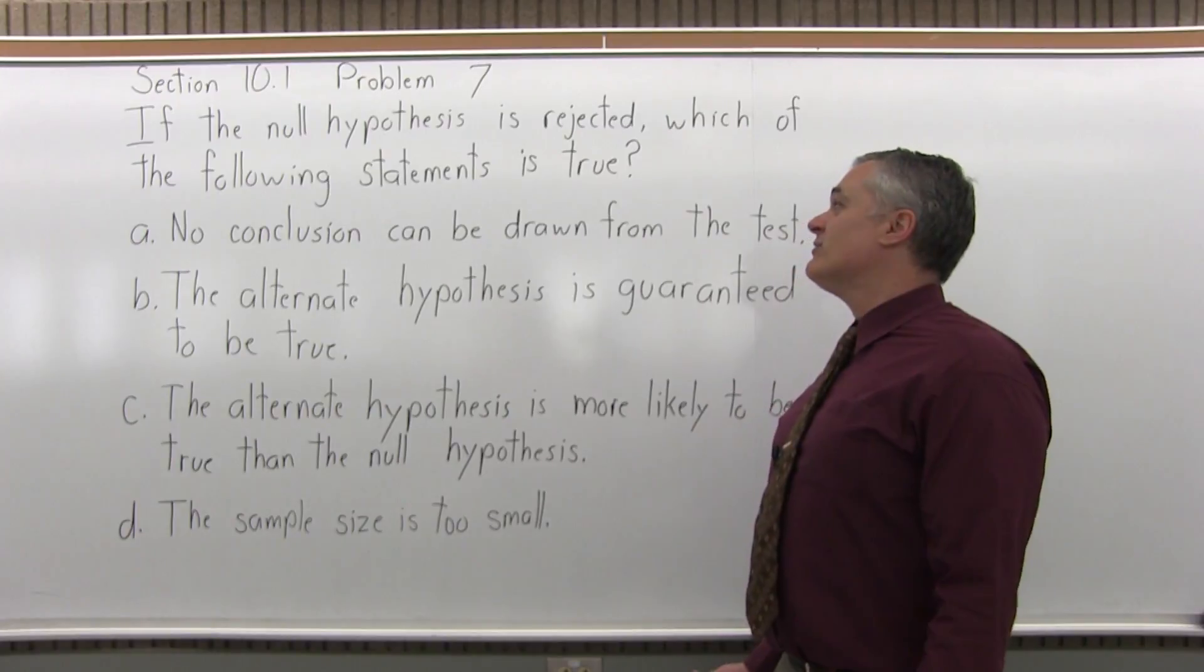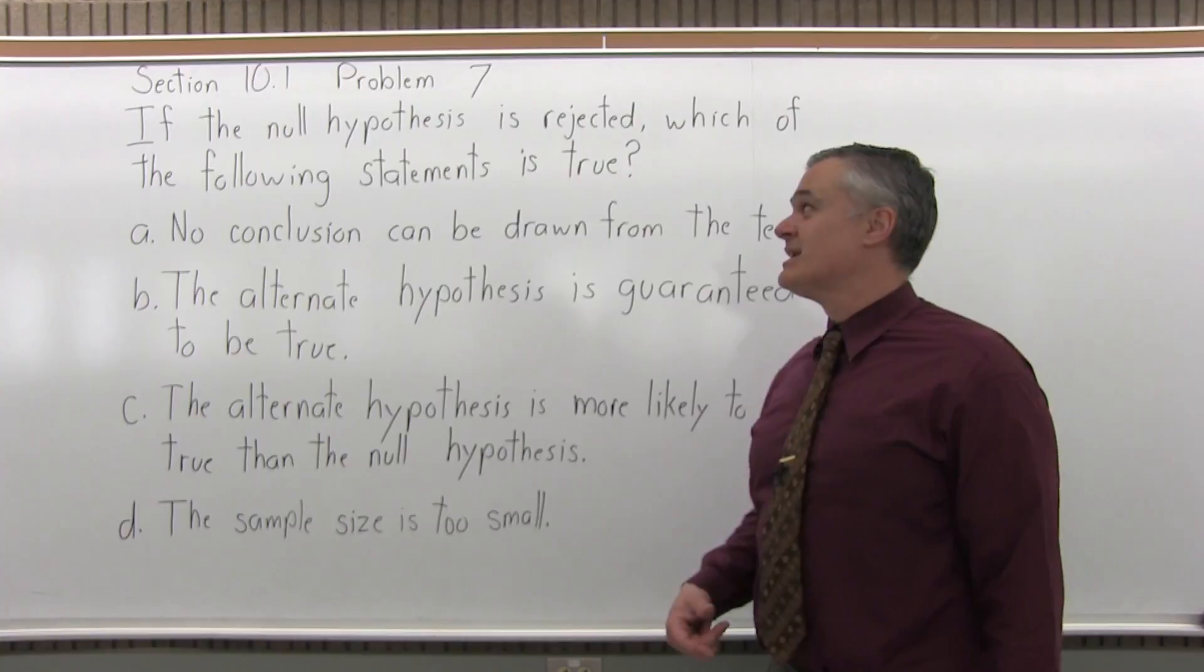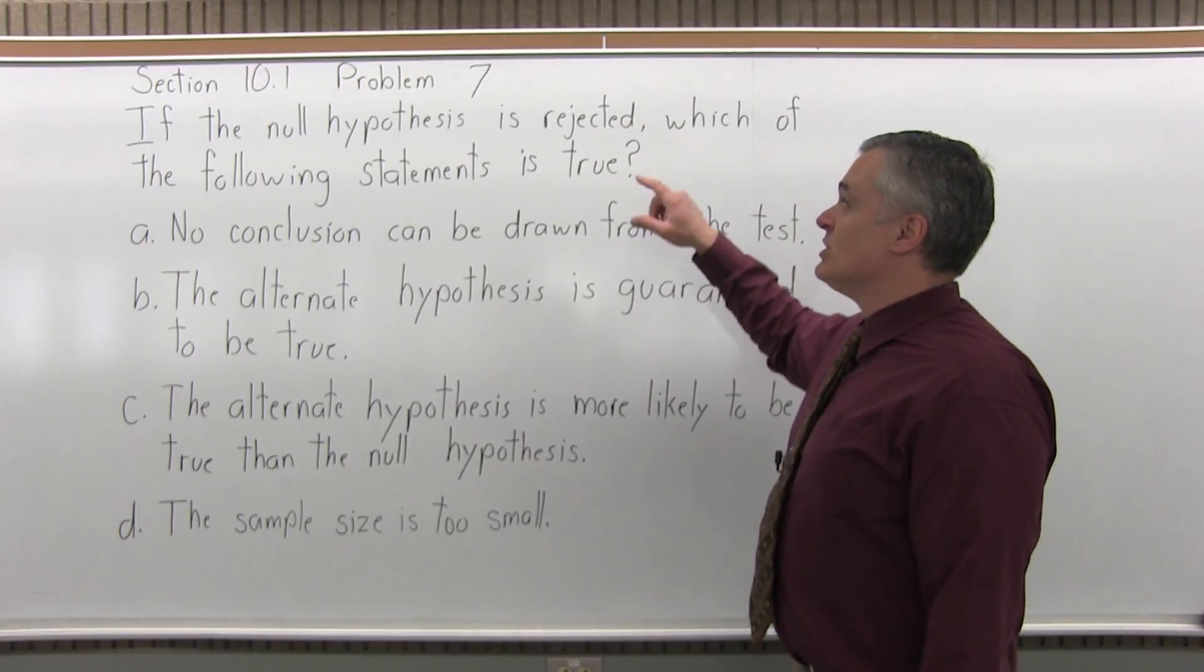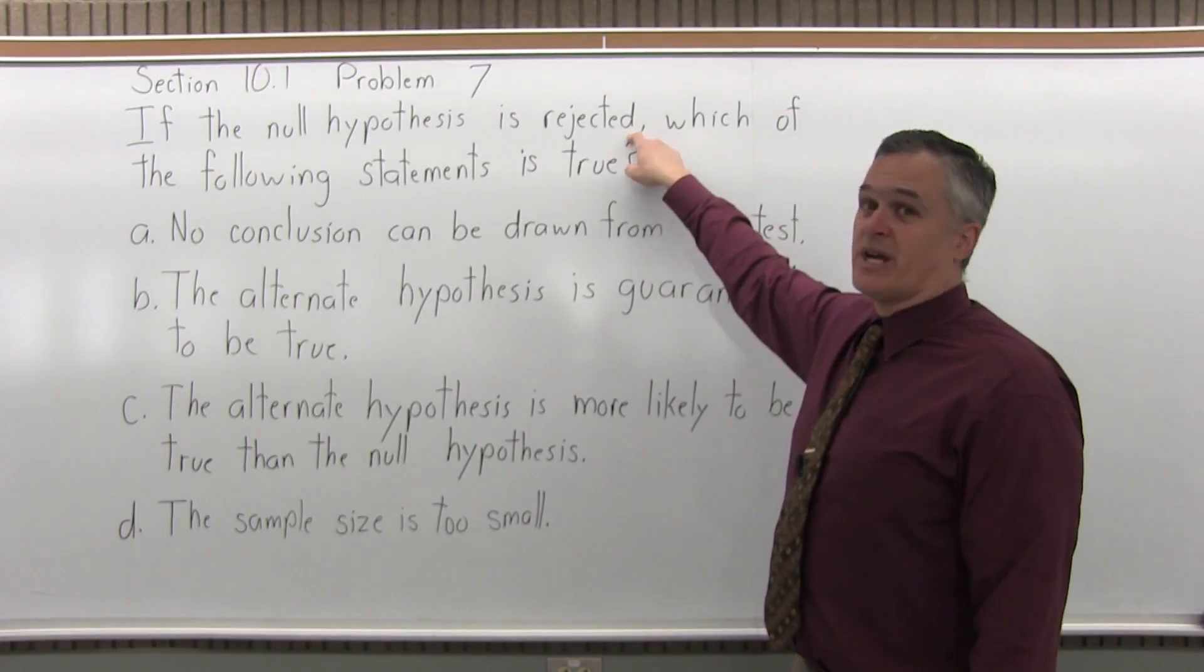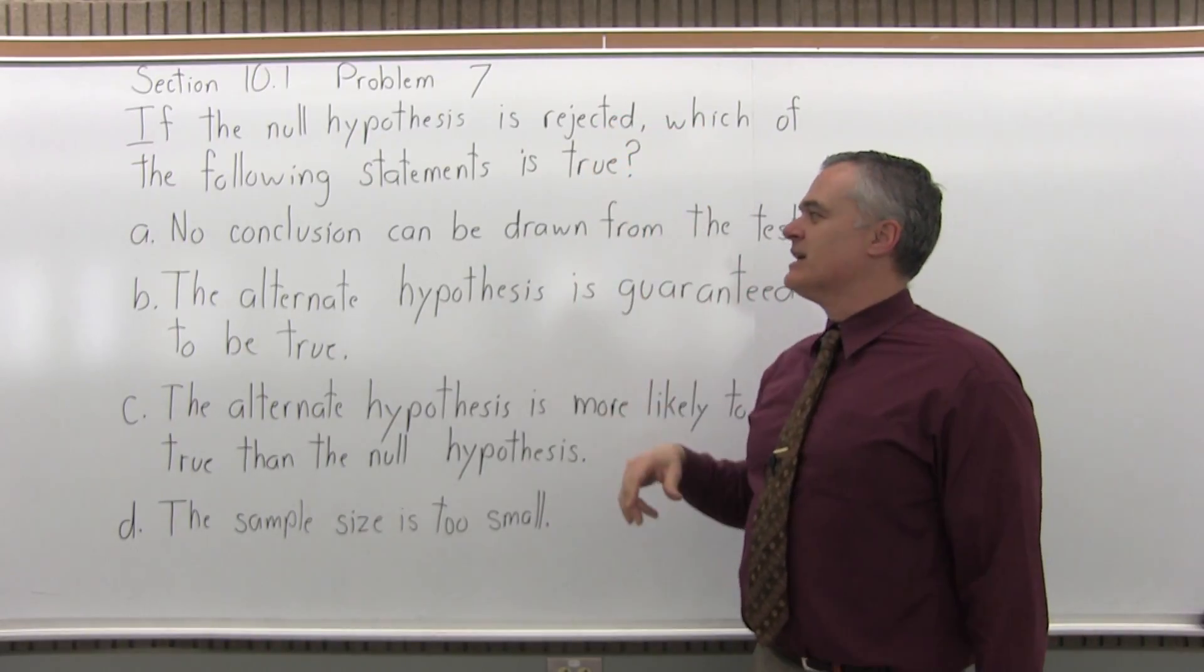So again, you're going to have two hypotheses, there's a null hypothesis and an alternate hypothesis. So if the null hypothesis is rejected, that's the one with the subscript of zero, what does it mean? Does it mean take the null? What is it saying?